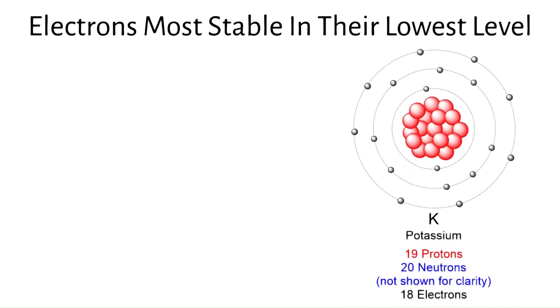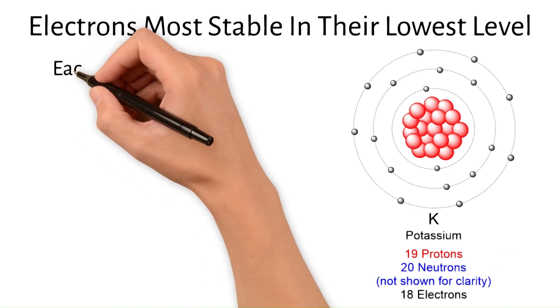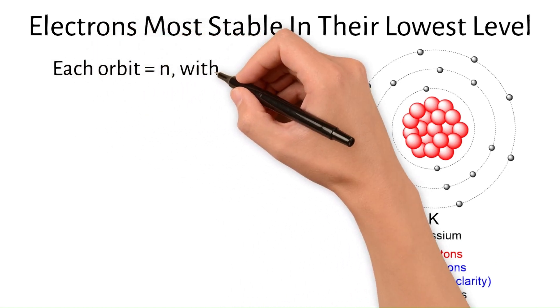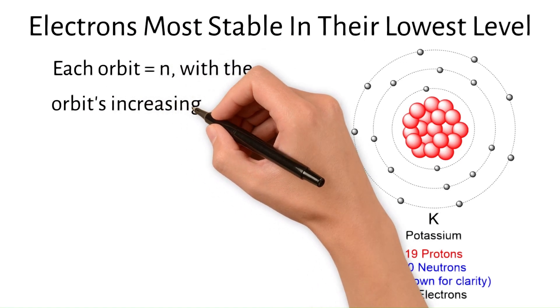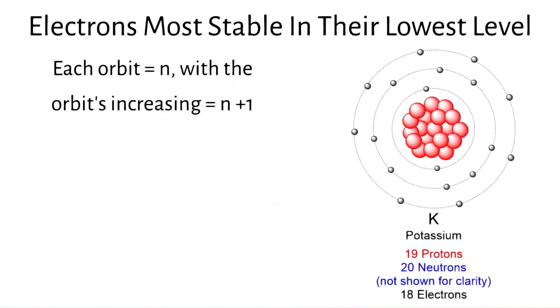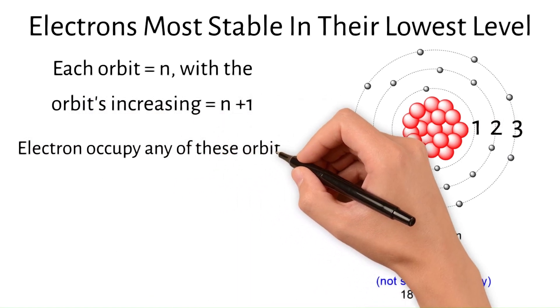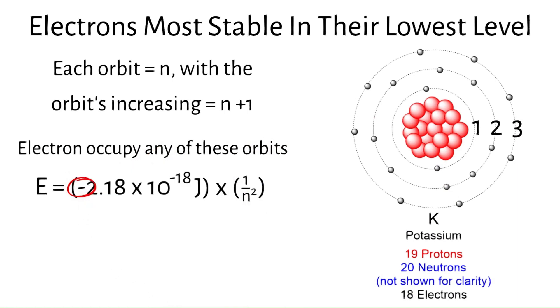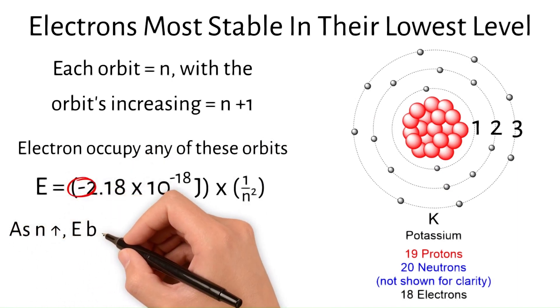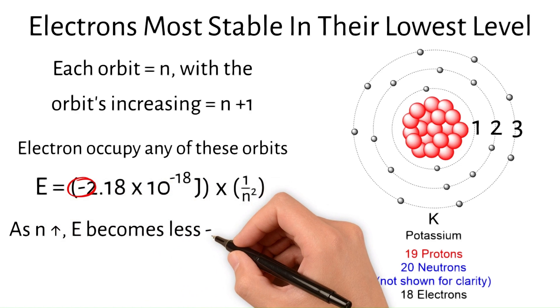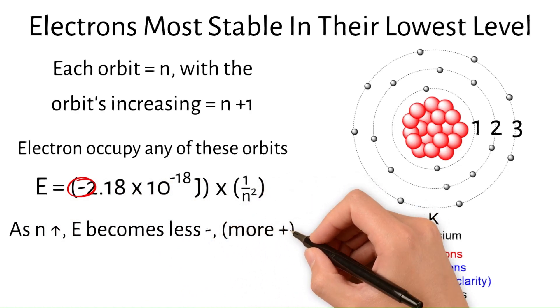Bohr achieved this via the following rationale. Each allowed orbit in an atom corresponds to an integer value of n with the orbit's radius increasing with n. Therefore, the orbit closest to the nucleus is designated as n equals 1, the next closest is n equals 2, and so on. An electron within the atom can occupy any of these orbits, and due to the equation, the electron's energy in each orbit is negative. As n, the principal quantum number, increases, the energy becomes less negative, and therefore more positive, thereby making the electron more unstable.